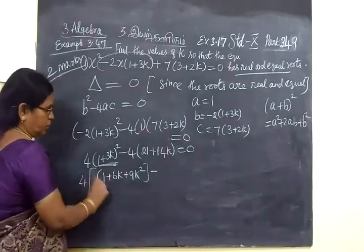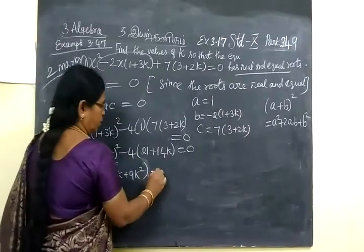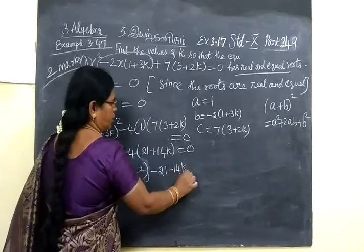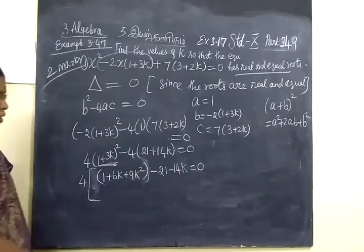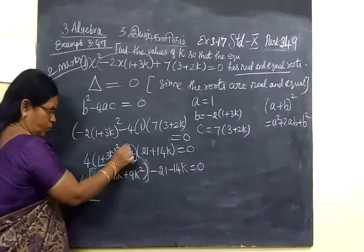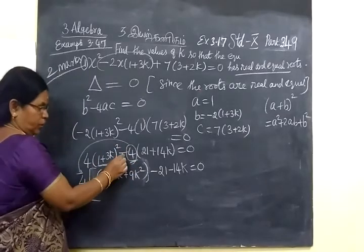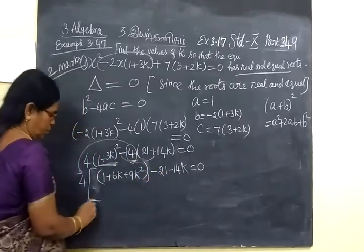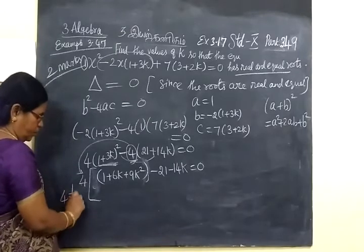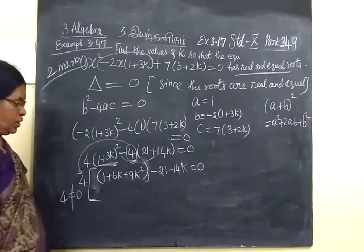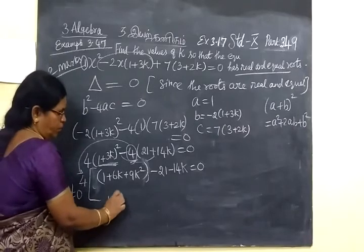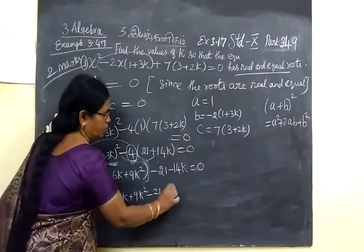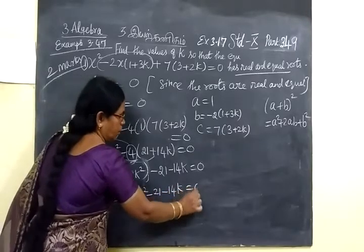So this is the value. We have to take minus inside, so minus 21 minus 14K equal to 0. Here you have taken 4 outside. Since 4 not equal to 0, the remaining one: 1 plus 6K plus 9K² minus 21 minus 14K equal to 0.